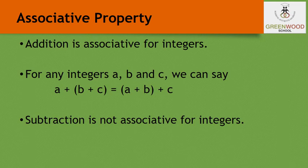Next is associative property. Addition is associative for integers. For any integers a, b, and c, we can say (a plus b) plus c equals a plus (b plus c). So for addition of any integers, if the grouping is changed, it does not make any difference. But for subtraction, associative property is not applicable — subtraction is not associative for integers.